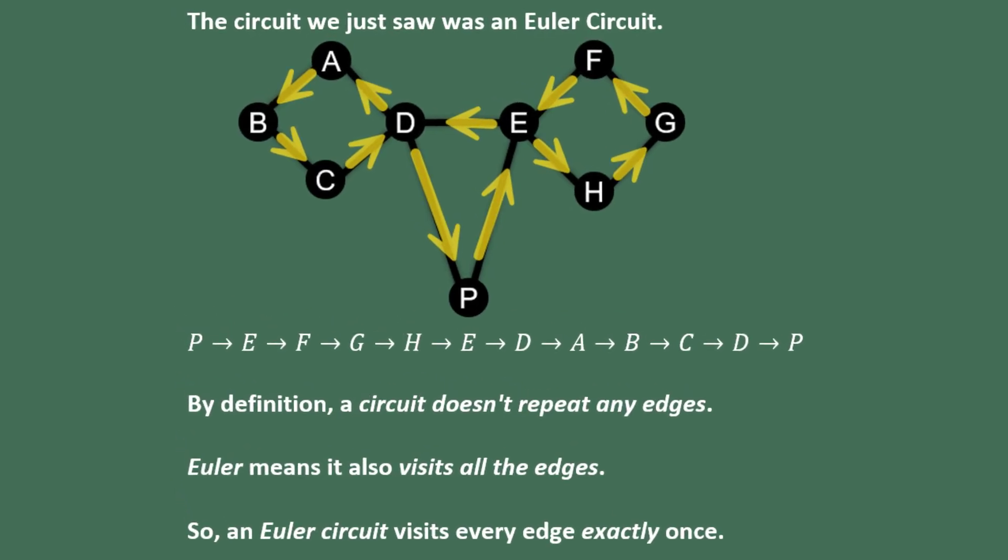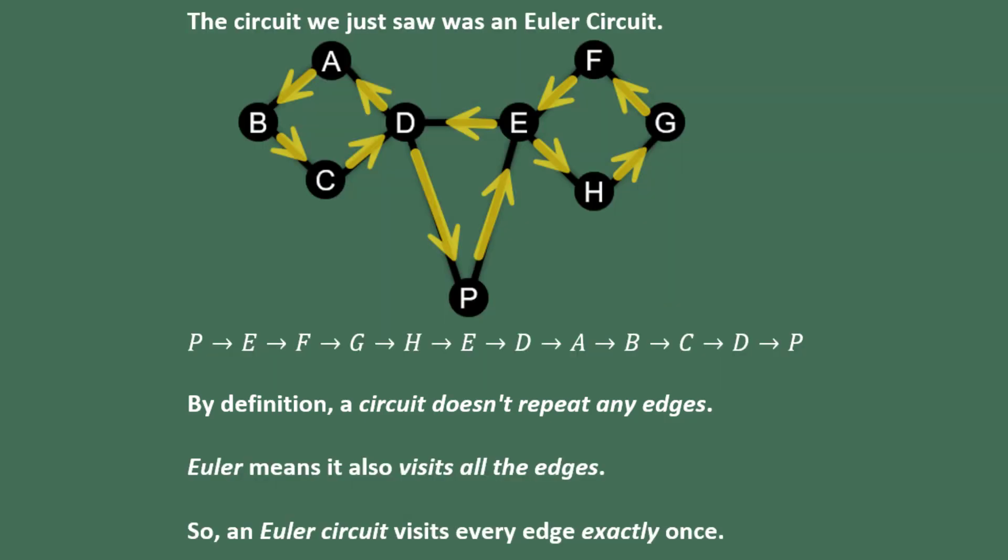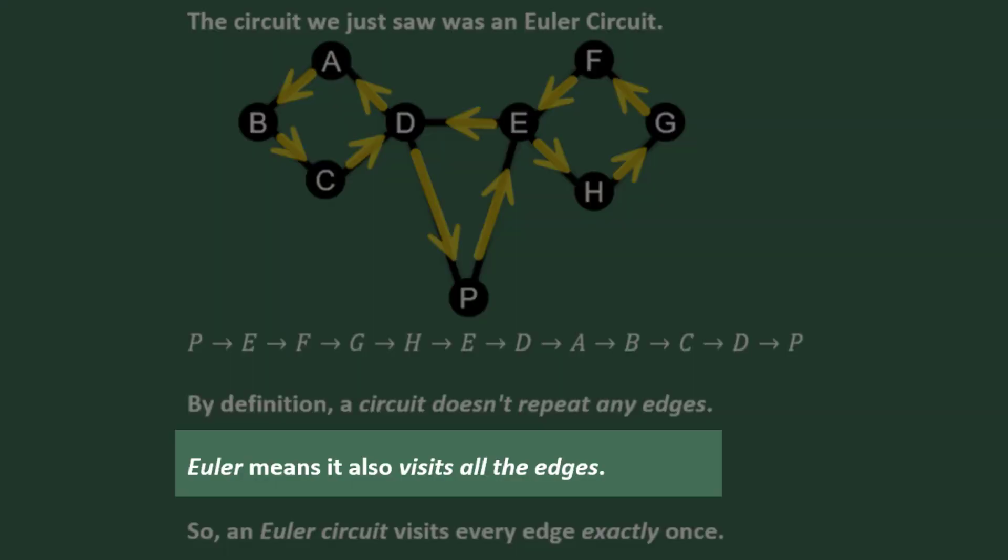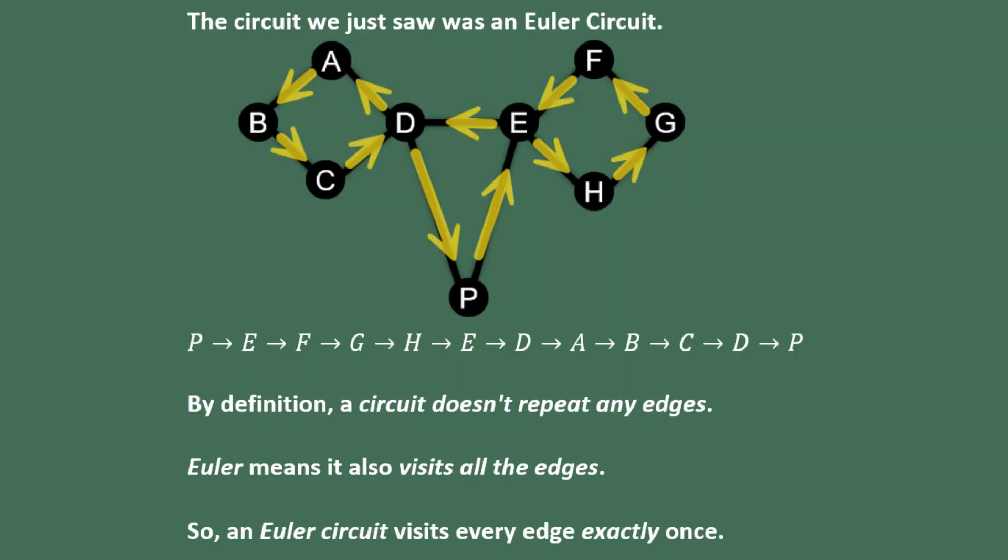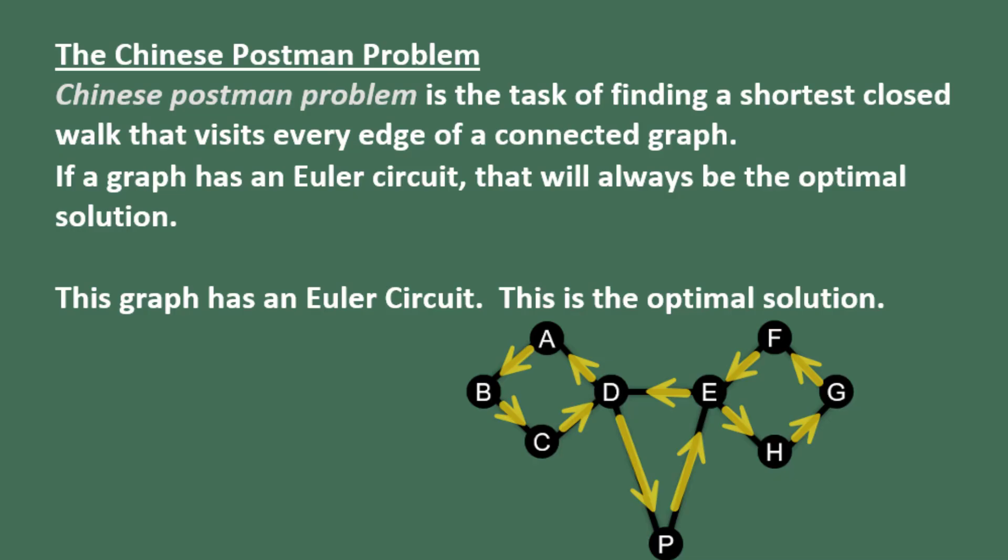The circuit that we just saw is an example of an Euler circuit. An Euler circuit is a circuit that visits every edge. By definition, a circuit doesn't repeat any edges. When we add the word Euler to the front of it, this means it also visits all of the edges. So if it visits all the edges and it doesn't repeat any, that means it visits every edge exactly once. Every Euler circuit visits every edge exactly once. So the Chinese Postman problem is the task of finding a shortest closed walk that visits every edge of a connected graph. If a graph has an Euler circuit, that will always be the optimal solution.